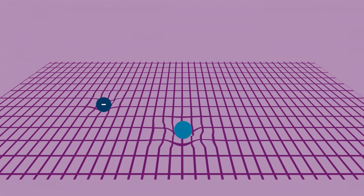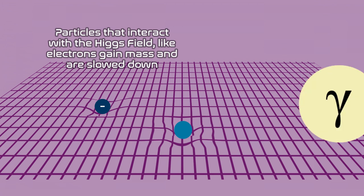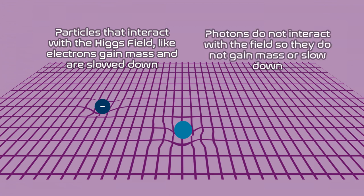As particles pick up mass, they slow down and are no longer able to move at the speed of light. However, photons do not interact with the field, making them massless and allowing them to move at the speed of light without interference.